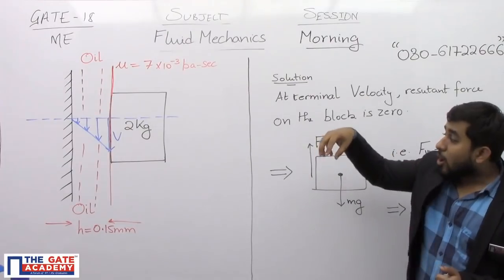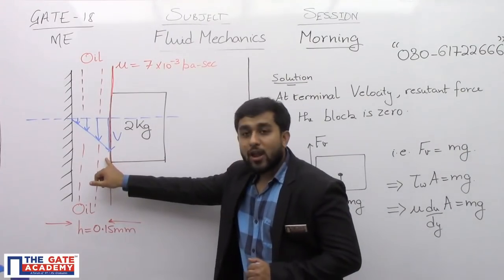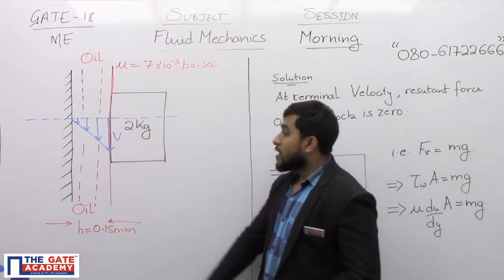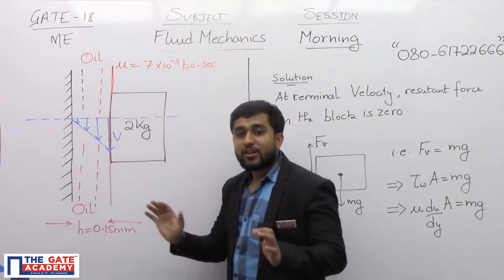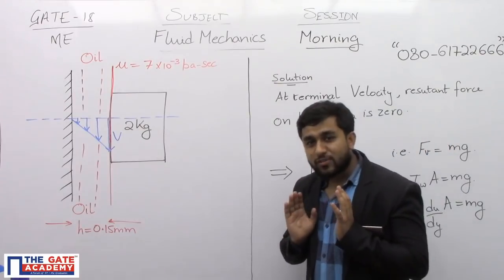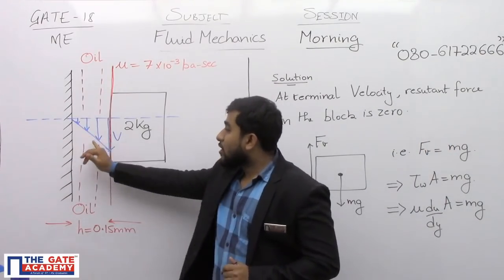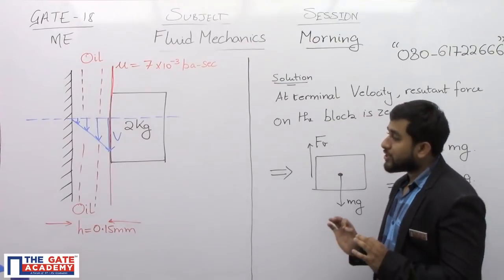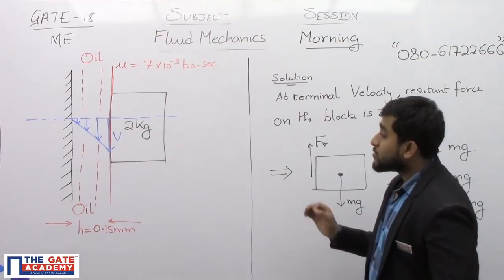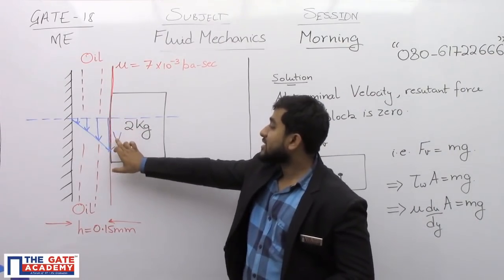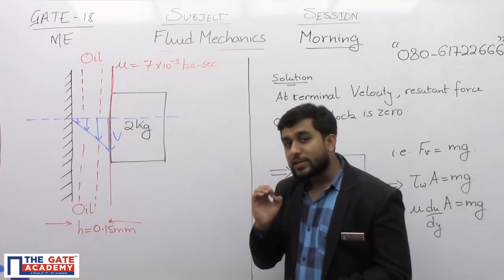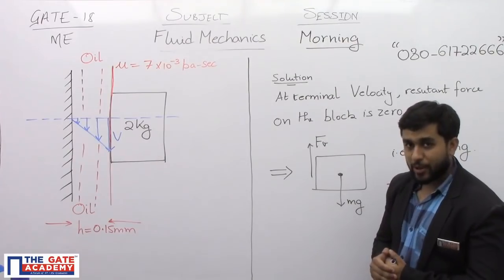Now as the block is sliding down, obviously the layer of the oil which is in contact with the block will move at a velocity equal to that of block and the layer of the oil which is in contact with the wall will remain at rest. So what would happen is that within the oil layer, velocity gradients will be set up and because of that there will be a velocity profile. It is given that the corresponding velocity profile is linear. That velocity profile is given and the maximum velocity is given as V. So obviously this is the velocity of the block also. So it is asking that what is the terminal velocity for this case.